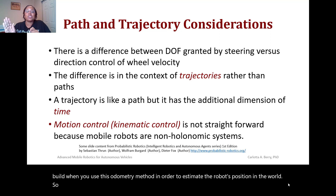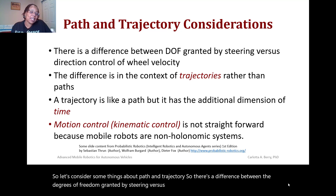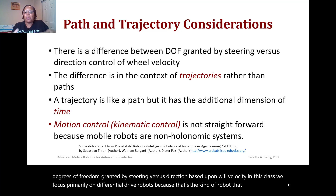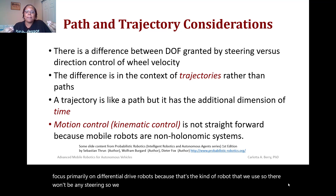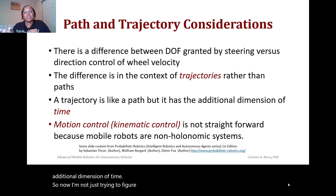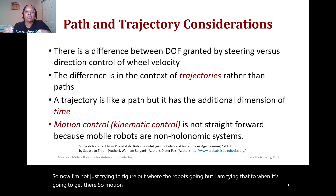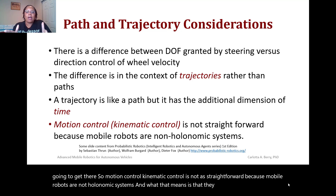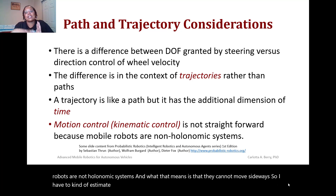There is a difference between the degrees of freedom granted by steering versus direction based upon wheel velocity. In this class we focus on differential drive robots, so there is no steering — we move the robot completely based upon velocities. The difference is in the context of trajectories rather than paths. A trajectory is like a path but with the additional dimension of time, tying where the robot is going to when it will get there. Motion control is not straightforward because mobile robots are not holonomic — they cannot move sideways.